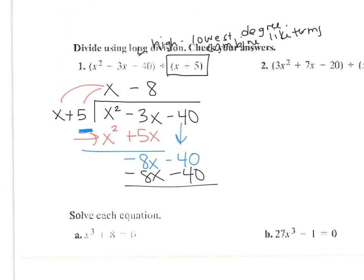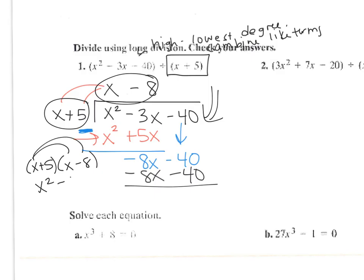So to check my answers, I'm going to use FOIL. I'm going to multiply this times this and see if it's equal to this. So I do x plus 5 times x minus 8. You're going to get x squared minus 8x plus 5x minus 40. That's equal to negative 3x, so it works.